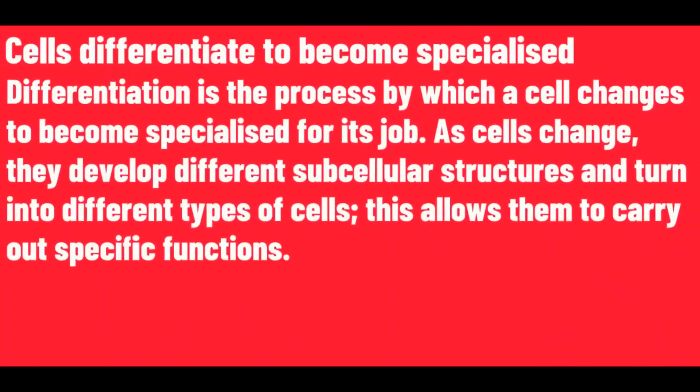Cells differentiate to become specialized. Differentiation is the process by which a cell changes to become specialized for its job. As cells change, they develop different subcellular structures and turn into different types of cells. This allows them to carry out specific functions.